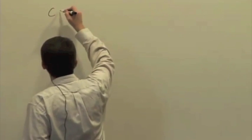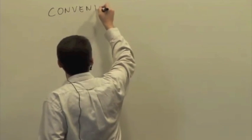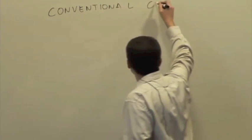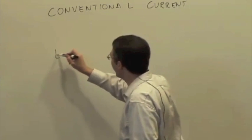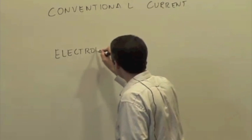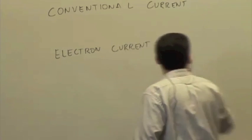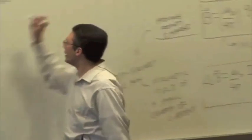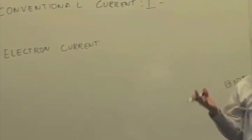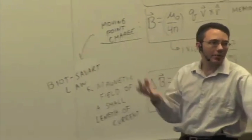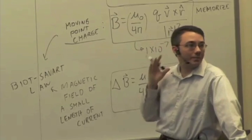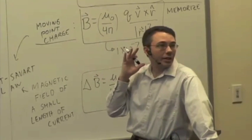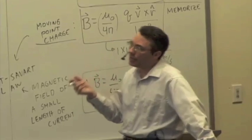By the way, what's a current? We have two currents to worry about: we have conventional current and the electron current. This capital I — is that conventional current or electron current? That's the conventional current. The definition of conventional current capital I — it's not electrons per second. That would be the electron current. The electron current, little i, is the number of electrons per second.